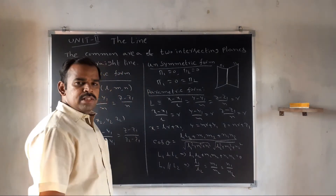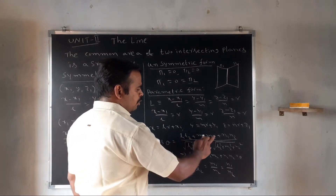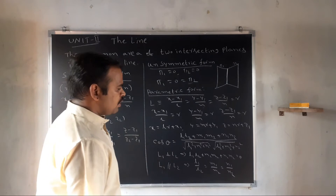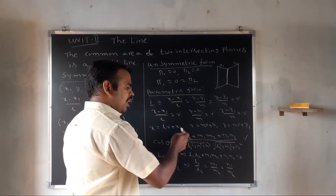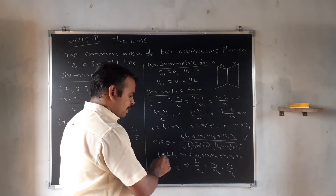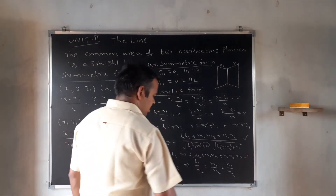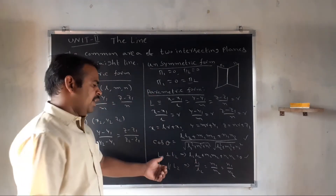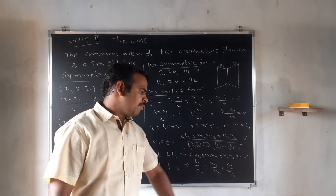For two lines L1 and L2, the angle formula is: cos θ = (l1·l2 + m1·m2 + n1·n2) / (√(l1² + m1² + n1²) · √(l2² + m2² + n2²)). Here A1, A2, B1, B2, C1, C2 replace l1, l2, m1, m2, n1, n2. For perpendicular lines: l1·l2 + m1·m2 + n1·n2 = 0. For parallel lines: l1/l2 = m1/m2 = n1/n2.